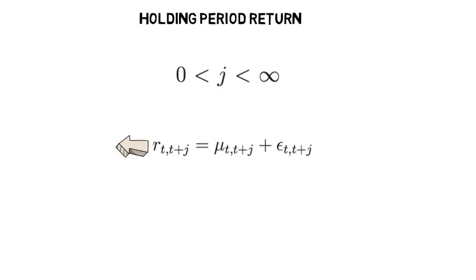So r_{t,t+j} is the realized return when buying an asset at time t and selling at t+j.